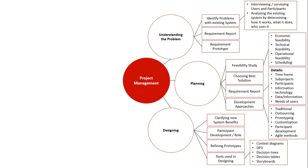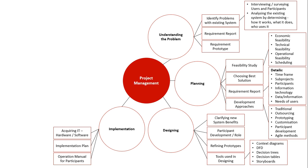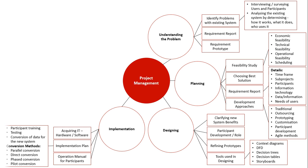Once the system is designed, we need to implement it into the working environment. We first acquire the hardware and software necessary to run the system and install it so people can use it. We then set up an implementation plan, supported by documentation and an operations manual for participants. Key areas in the implementation plan include: how participants will be trained, how they will assist in testing, and how the system will be converted — how we go from the old system to the new one.